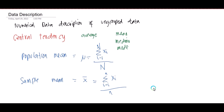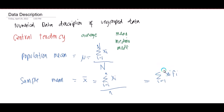If any of your observations occur with a specific frequency, the mean may be computed using a different formula. When there is a frequency consideration, the formula is the summation of x-sub-i multiplied by f-sub-i, from 1 to n, divided by the summation of your frequency from 1 to n. We will see this more clearly as we progress in this topic.